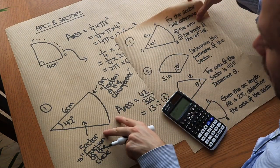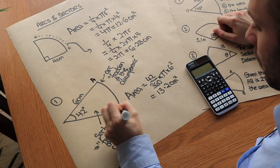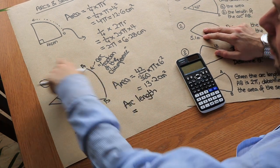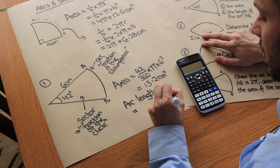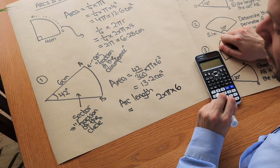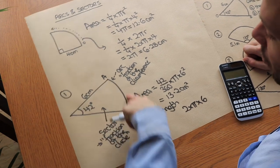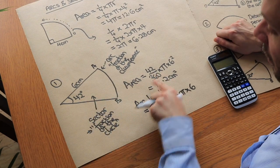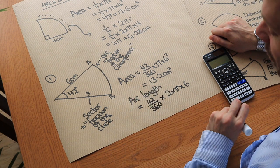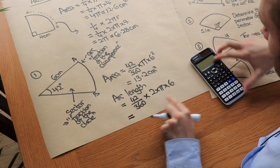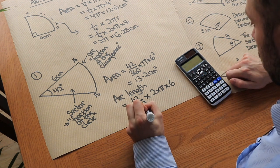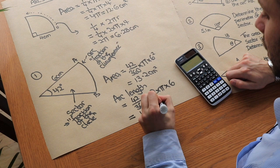We also want the arc length AB — the length of that curved line. The arc length starts with the circumference of a full circle: 2 pi r, where the radius is 6. We don't want the full circumference, just 42 three-sixtieths of it. So we multiply 2 pi times 6 by 42 over 360, and putting that into the calculator gives us 4.40 centimeters to three significant figures.